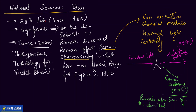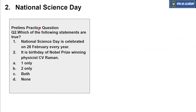National Science Day is celebrated on 28th February since 1986. Its significance: scientist CV Raman discovered the Raman effect, or Raman spectroscopy, on that day. Raman spectroscopy is a non-destructive chemical analysis through light scattering — 99.9% Rayleigh scattering at the same wavelength, and the tiny fraction of differently scattered light called Raman scattering reveals the chemical structure. The 2024 theme is 'Indigenous Technology for Viksit Bharat.' Please attempt the practice question and submit your answer in the comment section.